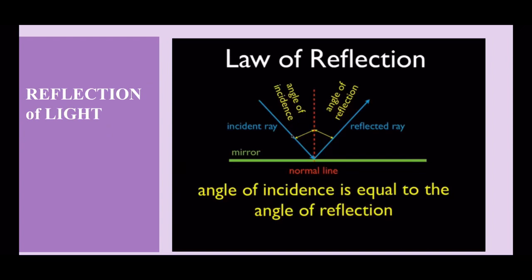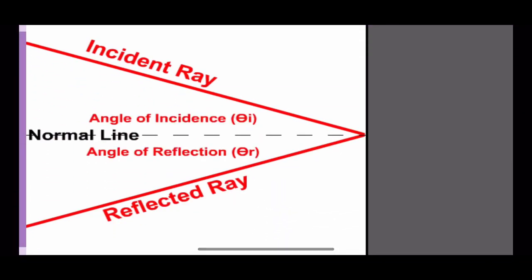The angle formed between the normal line and the incident ray is called the angle of incidence. And the angle formed between the normal line and reflected ray is called the angle of reflection. Angle of incidence is always equal to the angle of reflection. If the angle of incidence is 40 degrees, then the angle of reflection will also be 40 degrees.